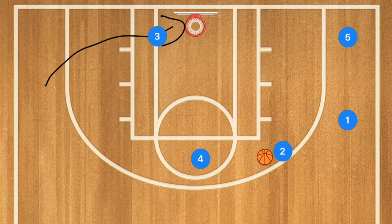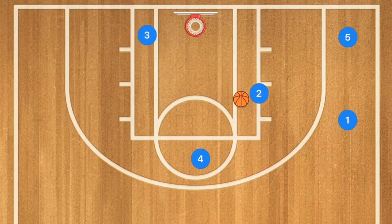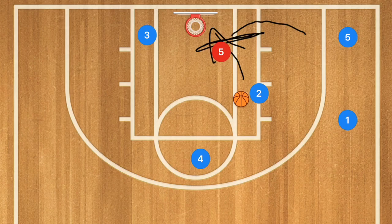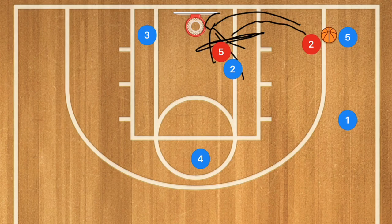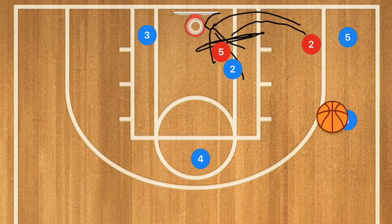Now keep in mind, if player two continues to drive because there's an open lane and player five's man helps out on defense, we may have the ability to pass out to player five for a three-point shot. Or if player one's man goes to play even stronger help defense, we can make the extra pass for that three-point shot.